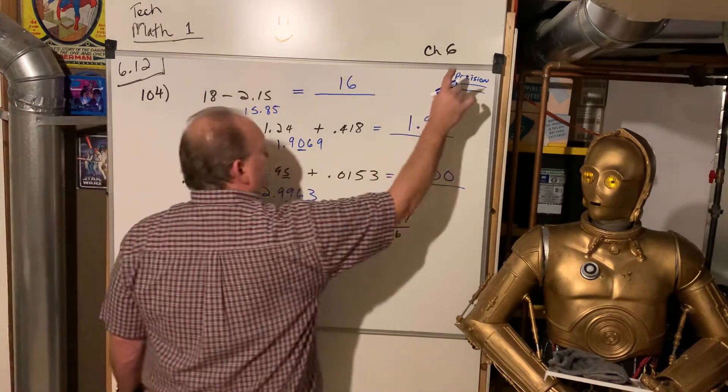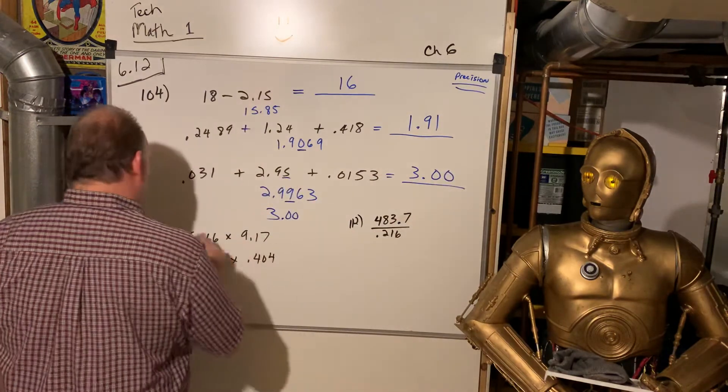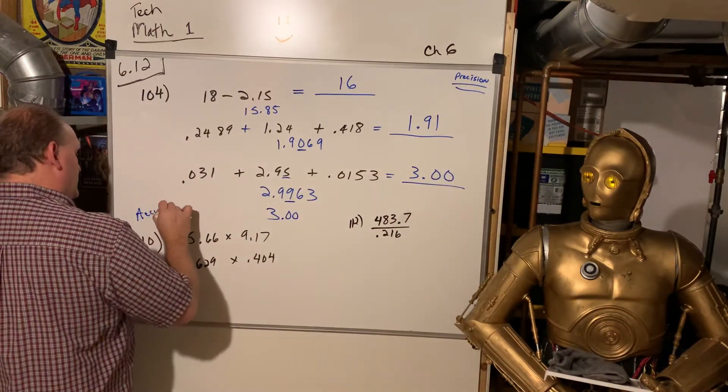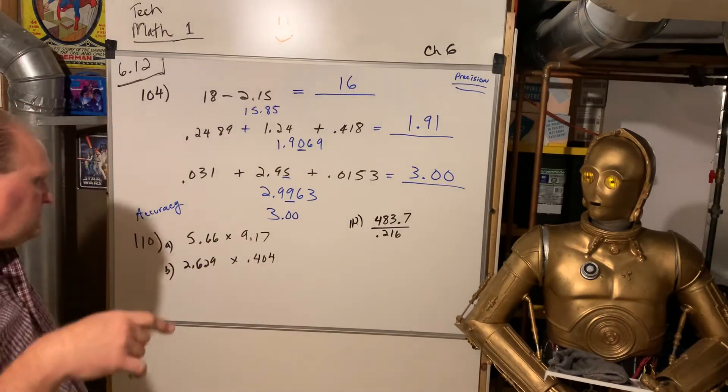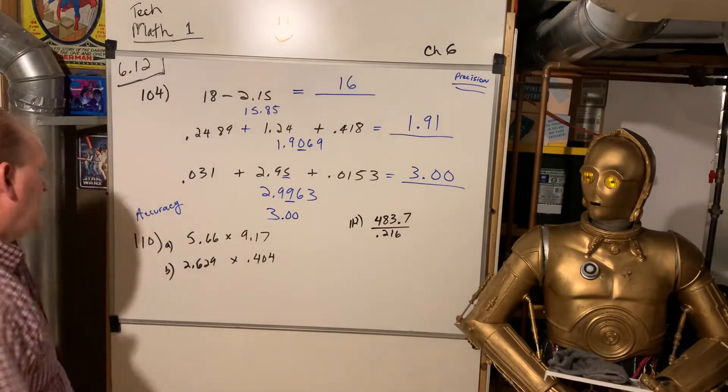I hope that is making sense to everybody, all right? So, when we multiply and divide, we don't use precision anymore. For multiplication and division, we use accuracy. And remember, accuracy is based on significant digits.